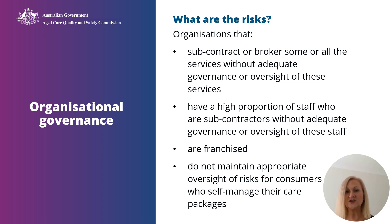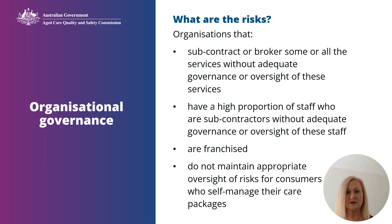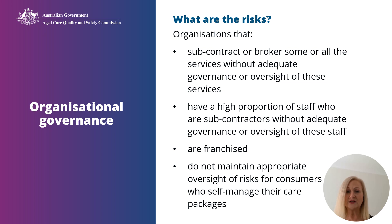Organisations that are franchised and do not have consistency or alignment with the quality standards in service delivery present a risk. Some franchises develop and maintain a set of policies and procedures that must be used by all franchisees. Where these procedures are not compliant or effective and result in potential risks to older people, this is the legal responsibility of the franchisee. If you run a franchise business operating under the brand of another business, you have to ensure your governance systems and practices are compliant and effective.